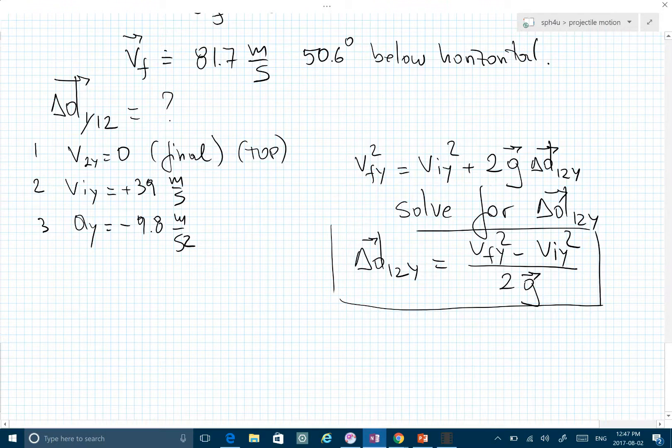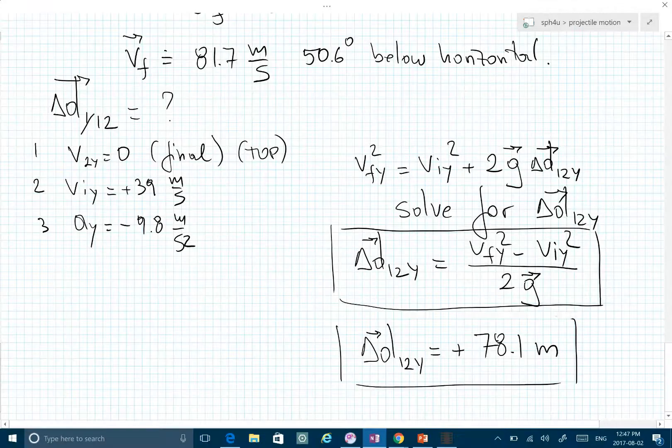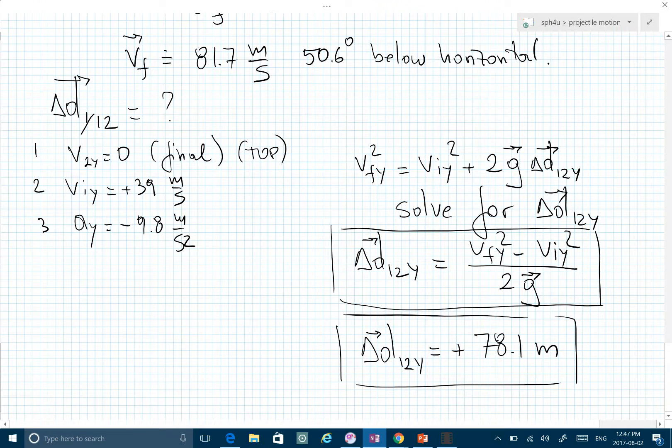That's the final equation. We substitute in the numbers, expect to get a positive number, and we get 78.1 meters. The projectile flew 78.1 meters above the edge of the cliff.